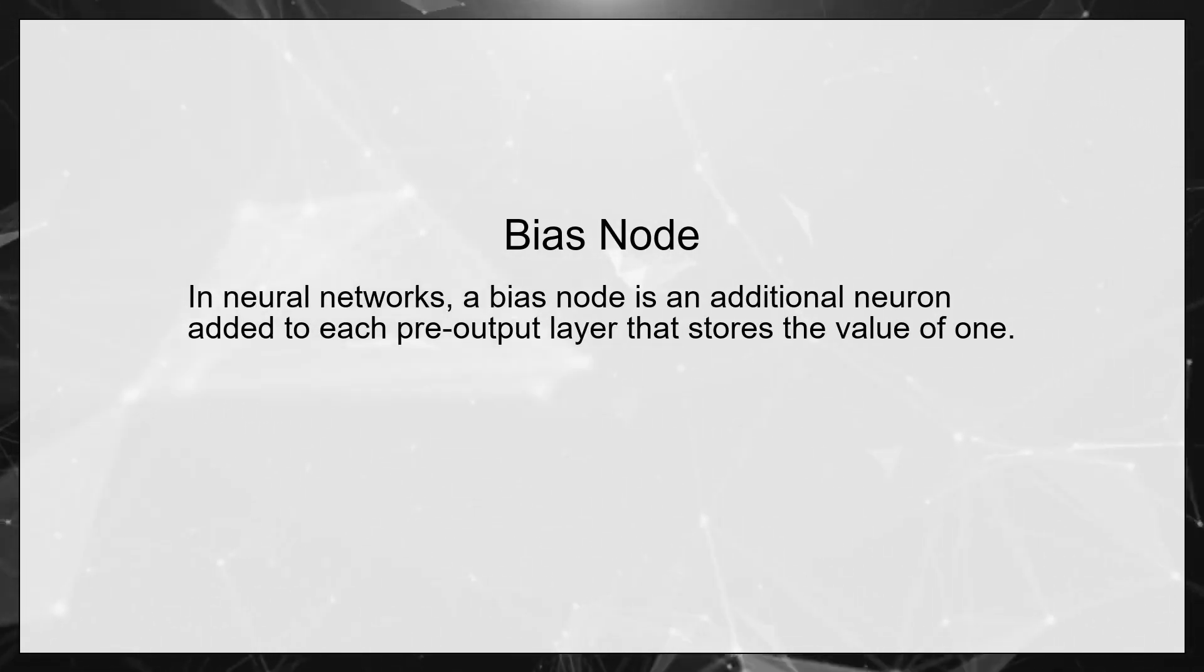Bias Node. In neural networks, a bias node is an additional neuron added to each pre-output layer that stores the value of one.